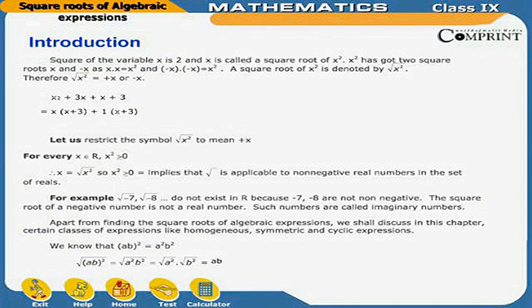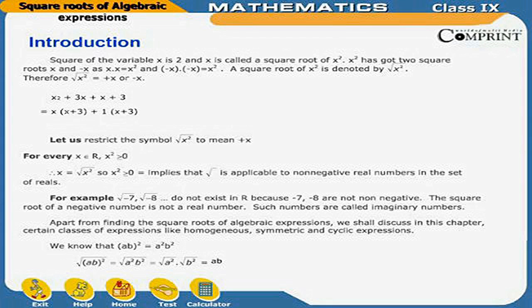Square Roots of Algebraic Expressions. The square of the variable x is x squared, and x is called a square root of x squared. x squared has two square roots: x and minus x, as x times x equals x squared and minus x times minus x also equals x squared. A square root of x squared is denoted by √(x²), therefore √(x²) equals plus x or minus x.